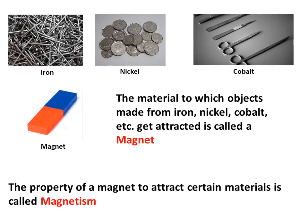So, now let us see what is a magnet. The material to which objects made from iron, nickel, cobalt etc. get attracted is called a magnet. And this property of a magnet to attract certain materials is called magnetism.